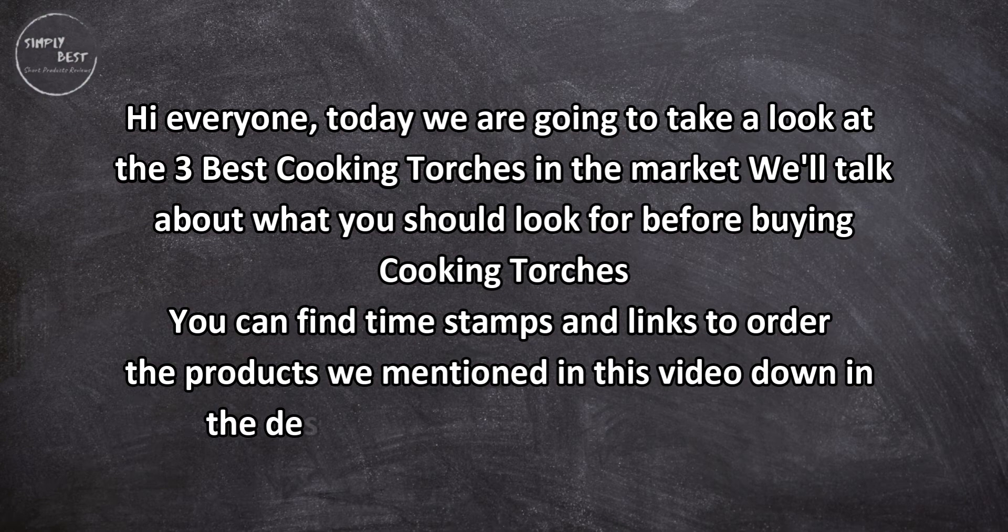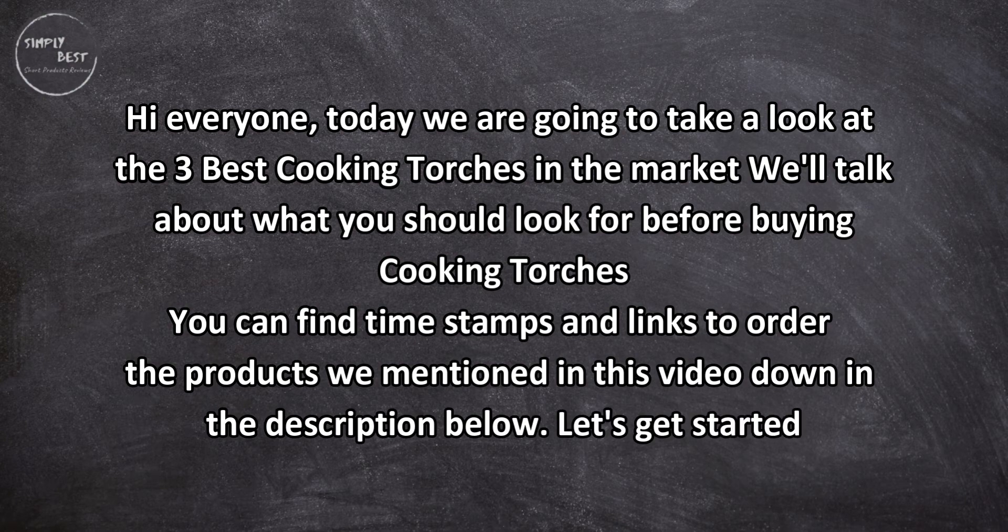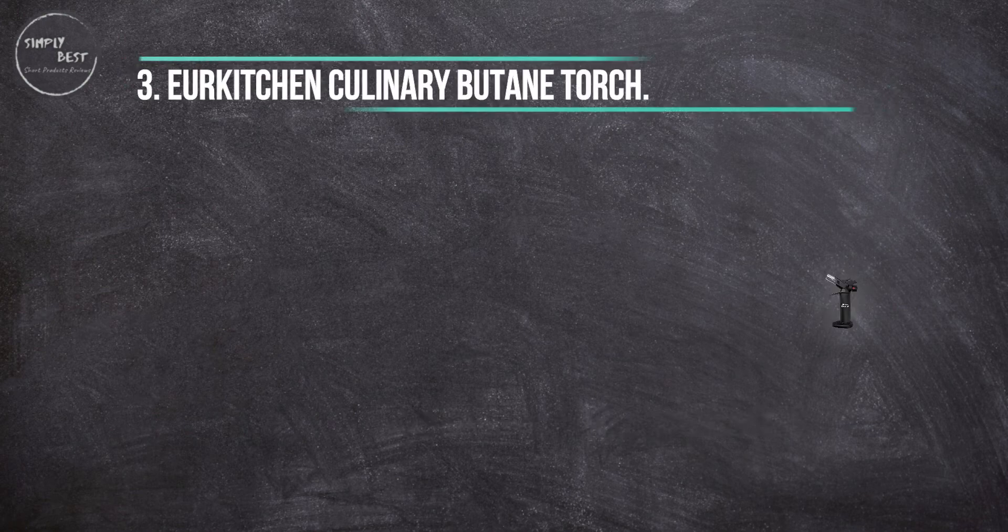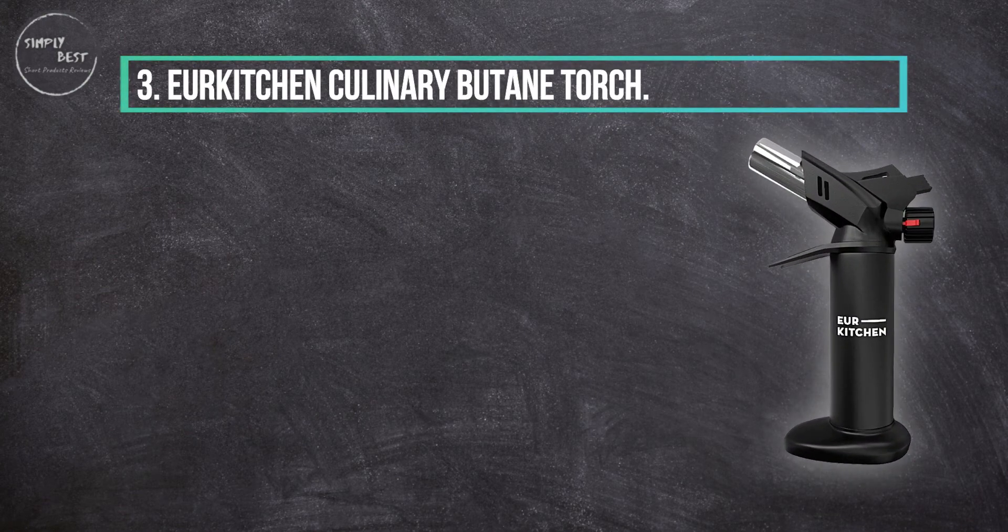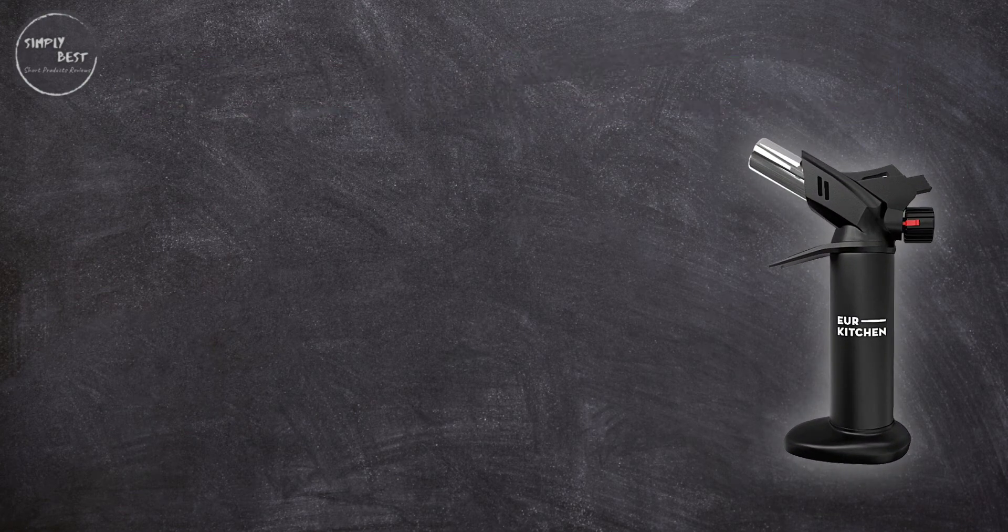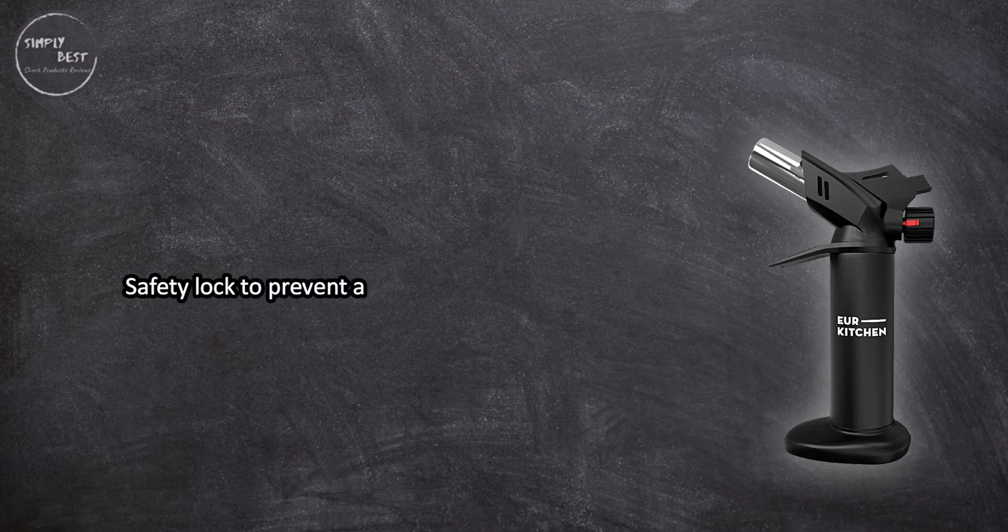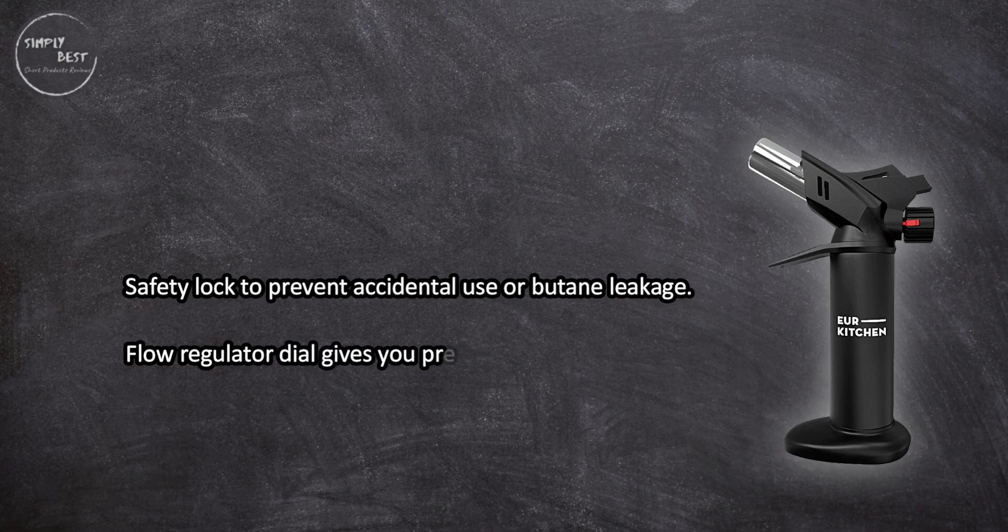Let's get started at number 3: Your Kitchen Culinary Butane Torch. Safety lock to prevent accidental use or butane leakage. Flow regulator dial gives you precise control over the size of the flame.